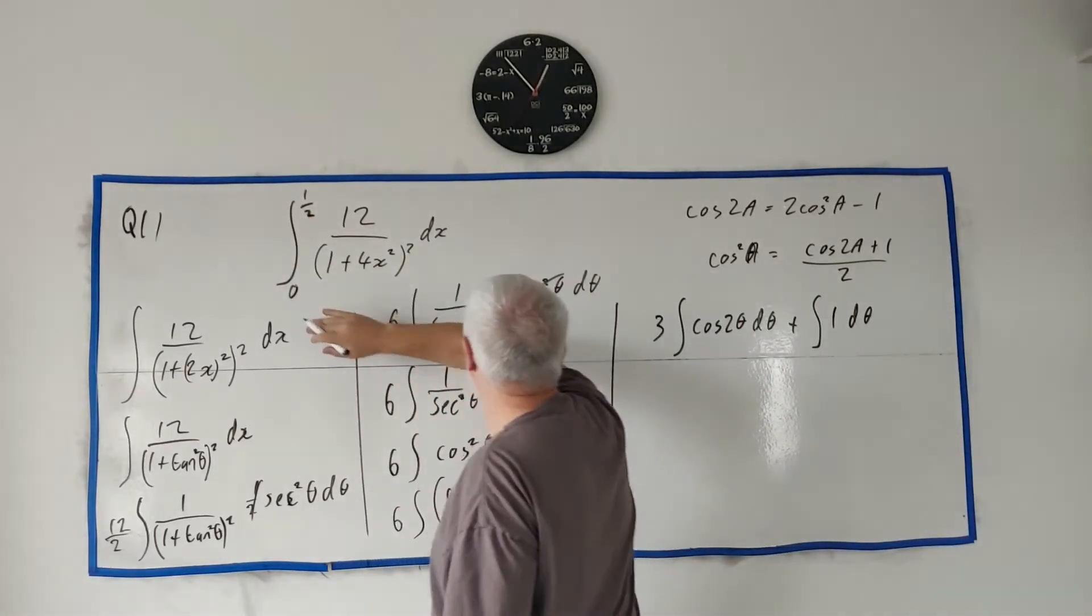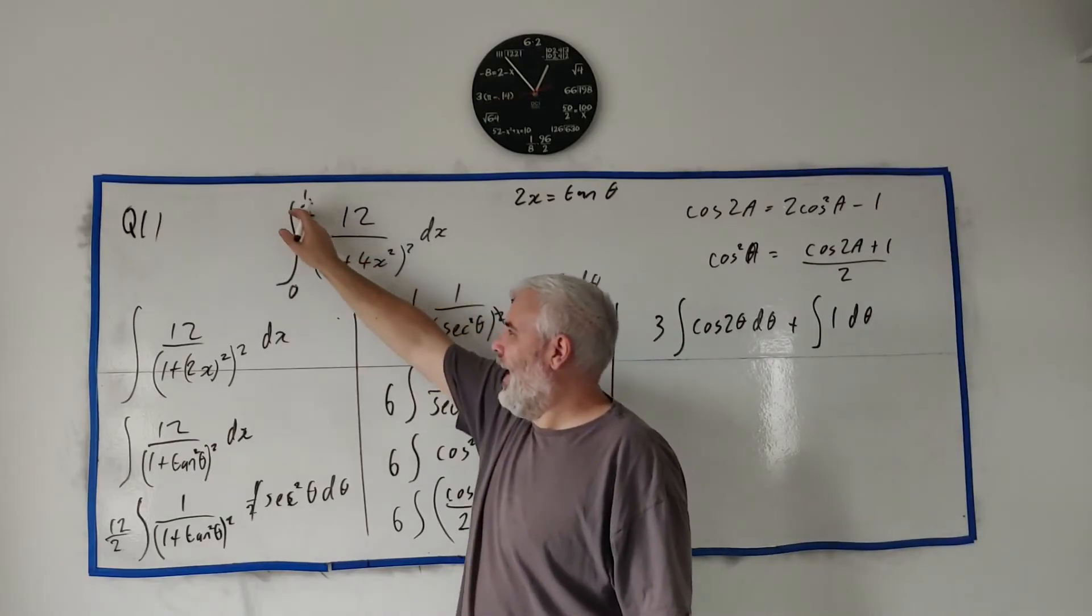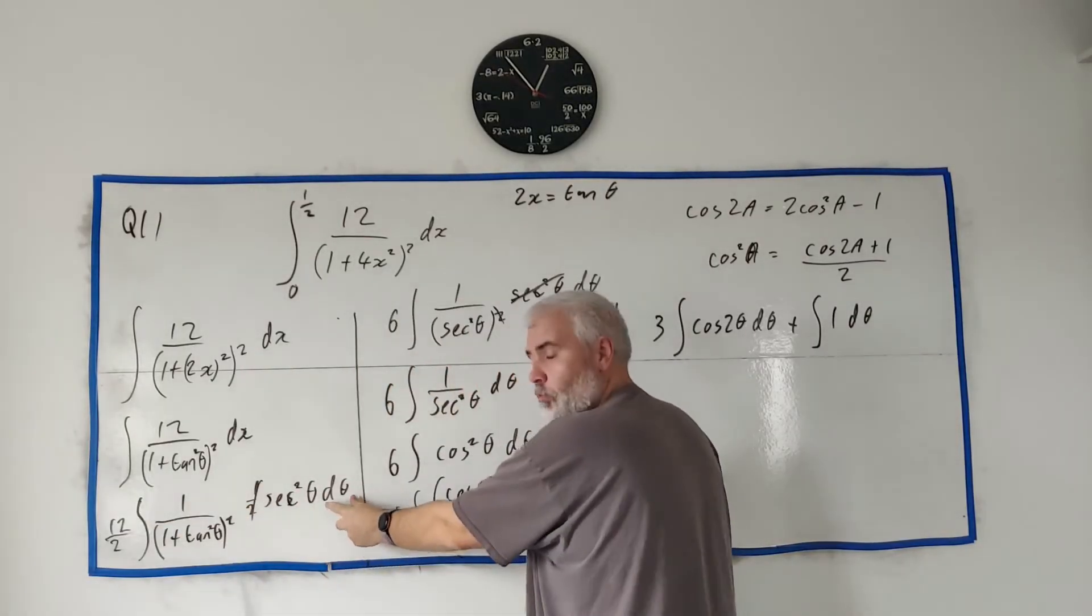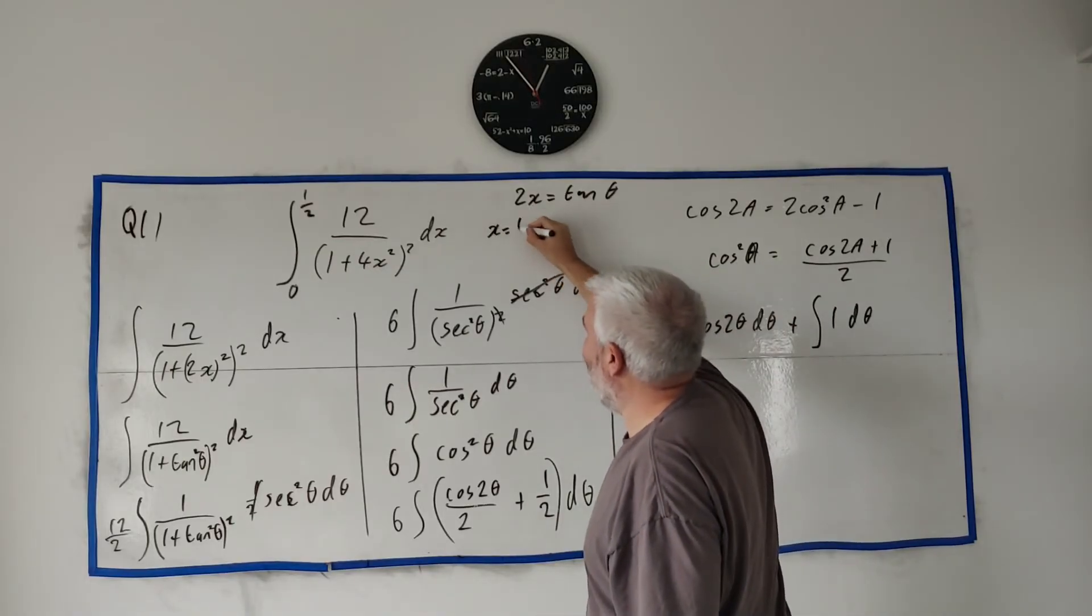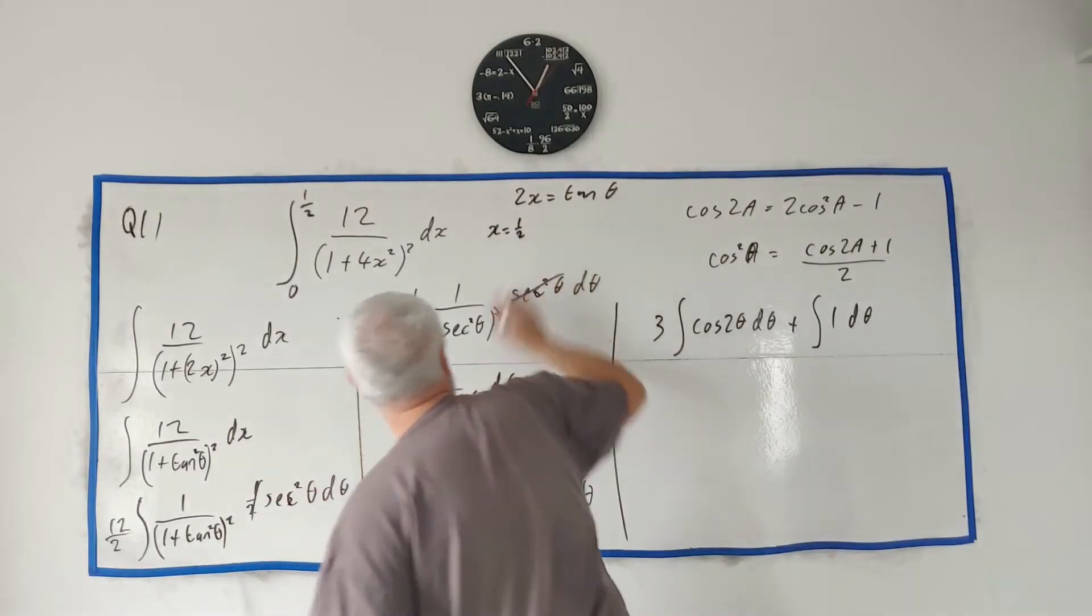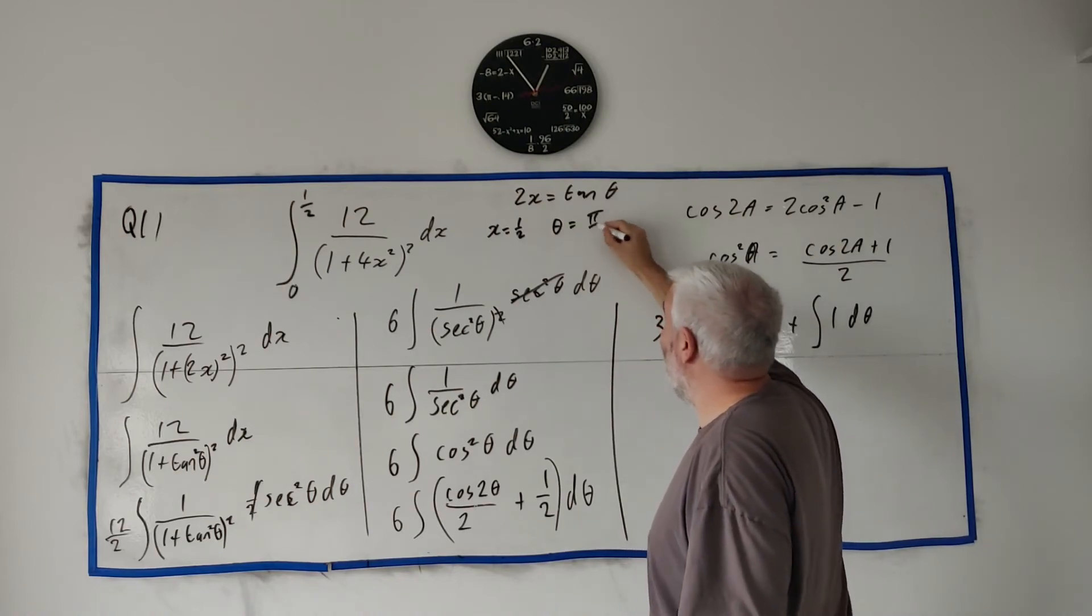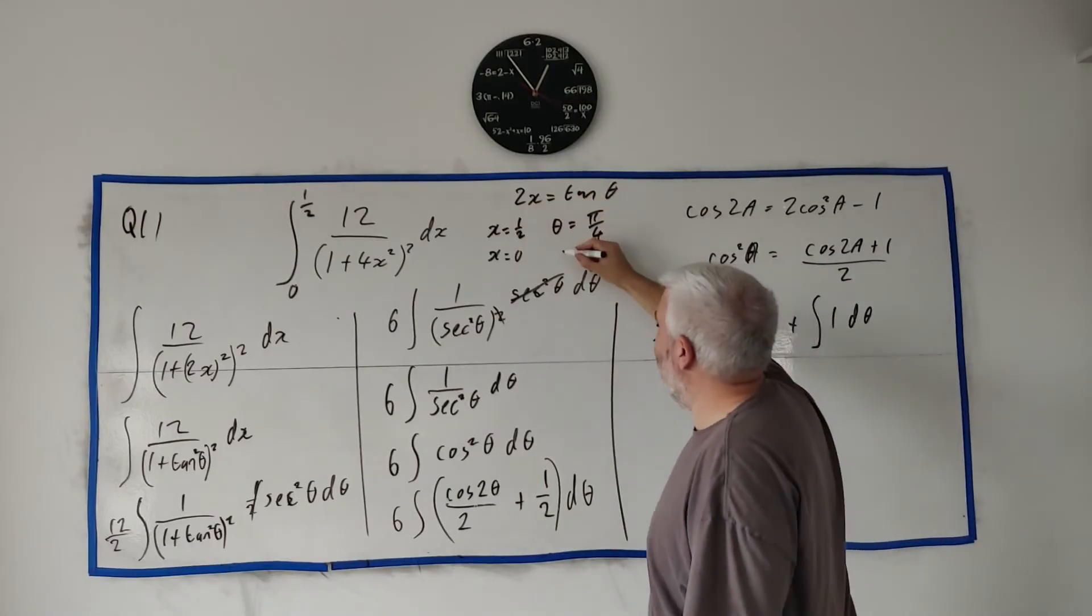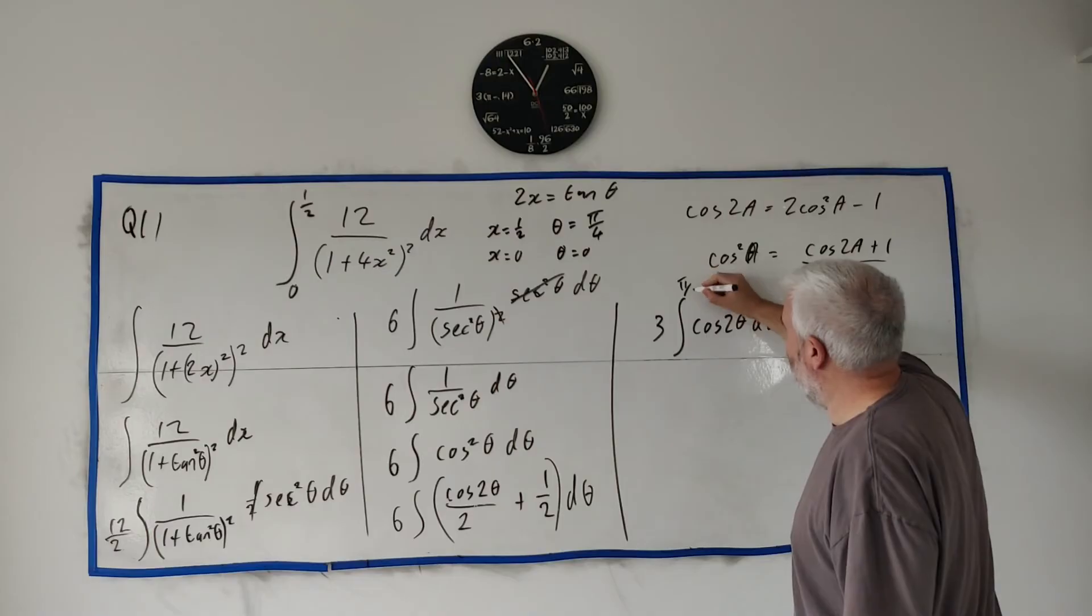We started with 2x = tan θ. When x equals ½, what is θ? We can just put it in: 2 times ½ is 1, and the inverse tangent of 1 is π/4. When x equals 0, that's a lot easier: tan of what is 0? That's θ equals 0. So putting that all back in here I would get π/4 and 0, π/4 and 0.